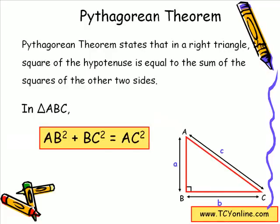Now in the figure, it is given that AB equals A, BC equals B, and AC equals C. So we can write this as A² + B² = C².